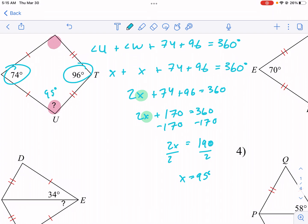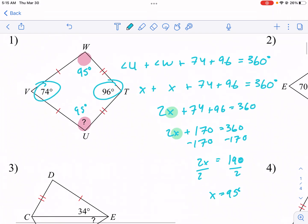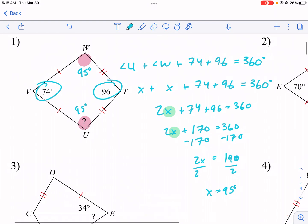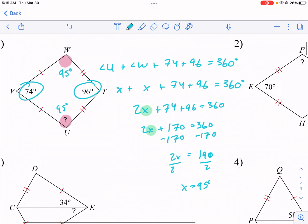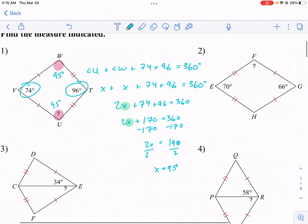And that means that's 95 degrees, and also that is 95 degrees. And a way to check our answer is we could add up all four of those angles, and we could see if it makes 360, and it will. So that's number one.